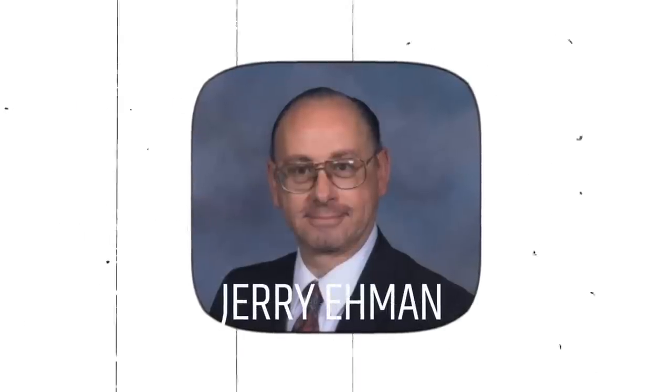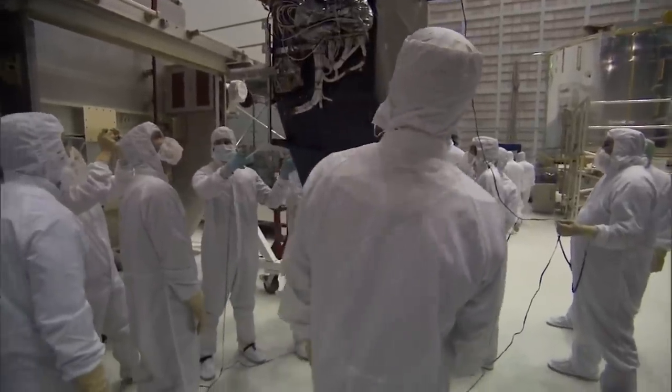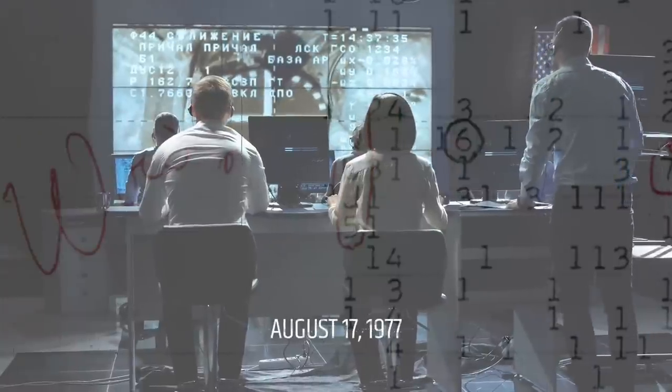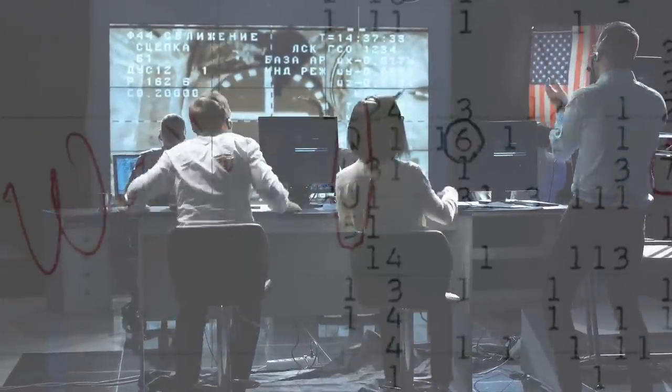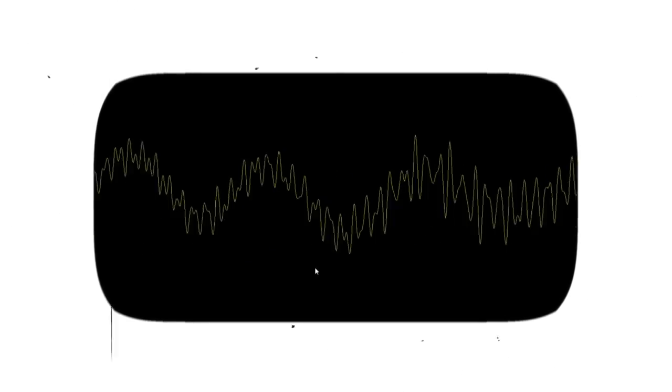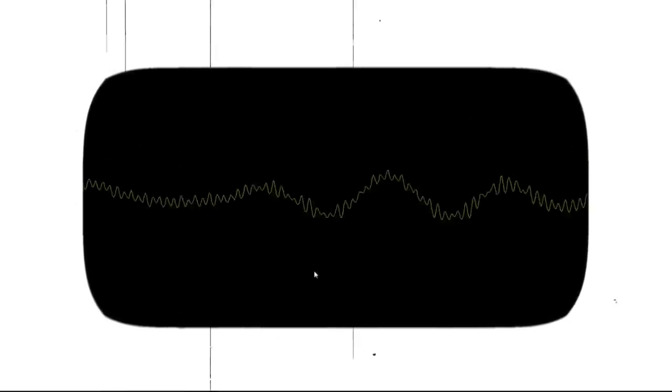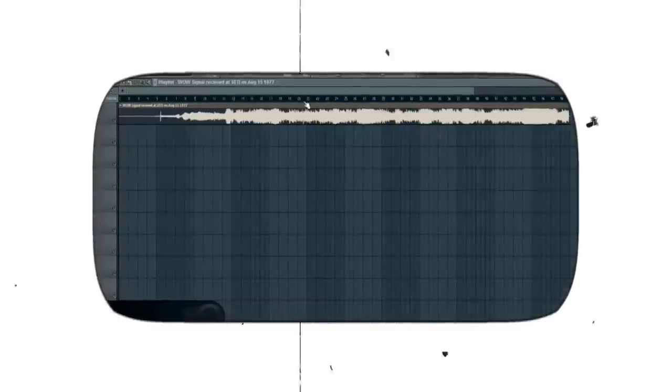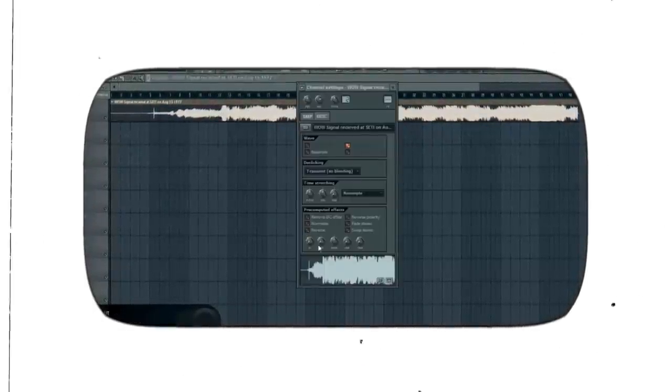Jerry Ehman was reviewing the latest batch of computer printouts from the Big Ear radio observatory, where he was volunteering as an astronomer. On August 17, 1977, Ehman spotted the set of numbers and letters that looked like nonsense to the untrained eye. But to Ehman, the data meant that Big Ear had picked up a very strong signal that started out low, increased in strength, and then dropped off again. The signal also only appeared in one of 50 possible channels.